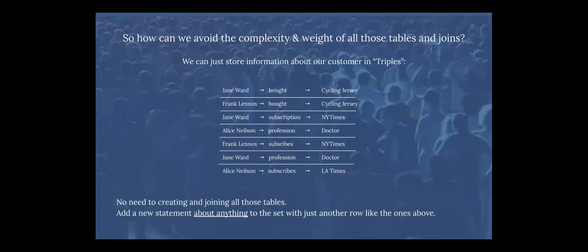Triples are called that because they've got three parts. You can see Jane Ward at the top — that's the subject. 'Bought' is the predicate; it's what we're saying about that subject. And 'cycling jersey' is the object. So it's pretty intuitive: Jane Ward bought a cycling jersey. Frank did too, and Jane Ward subscribes to the New York Times, and so on. So these are independent statements called triples — we don't need to create tables to store them.